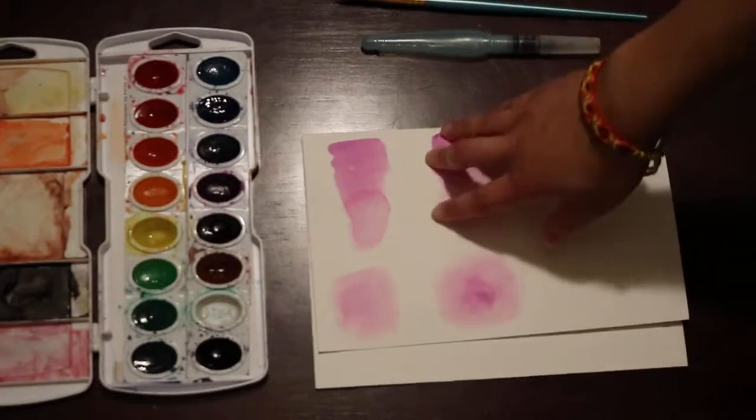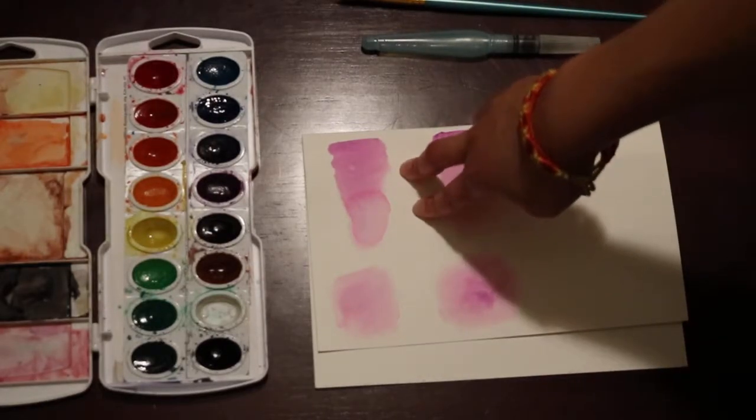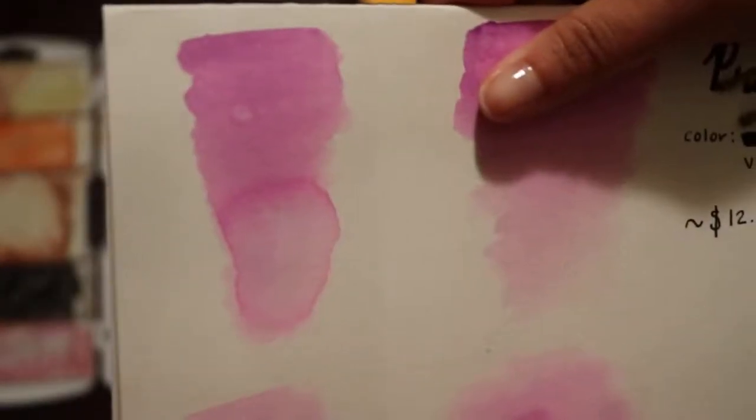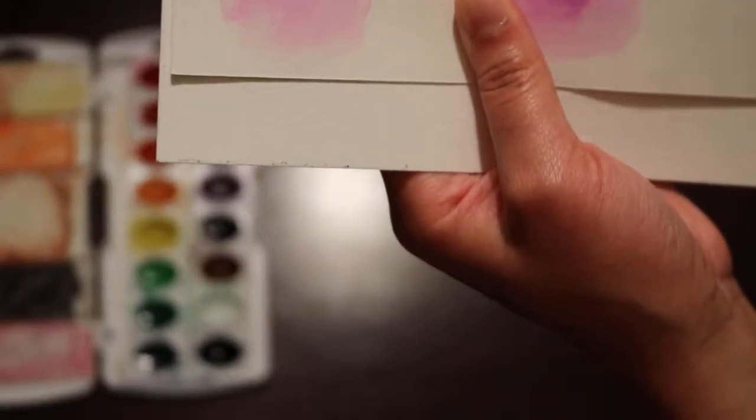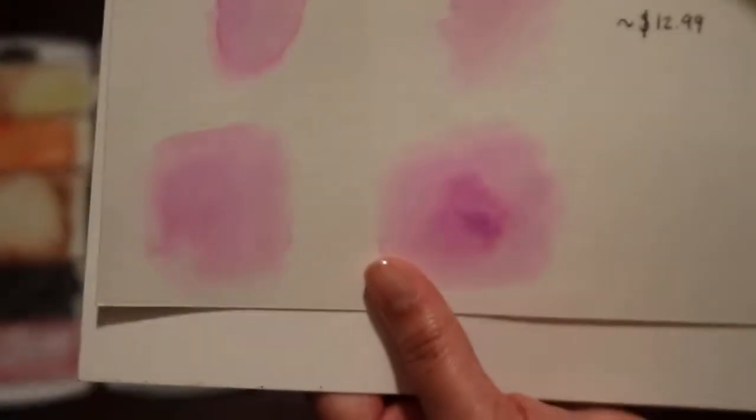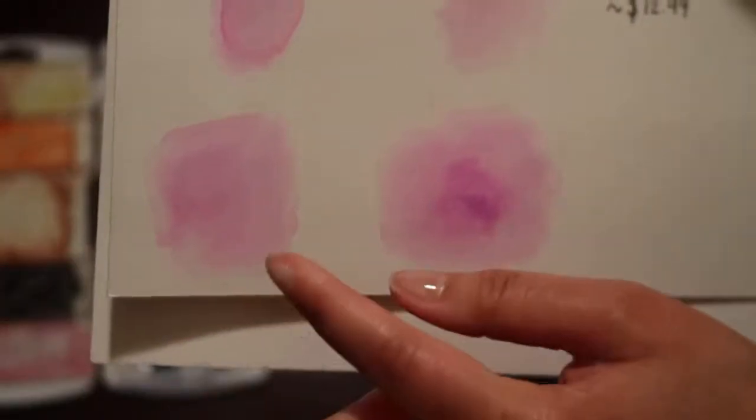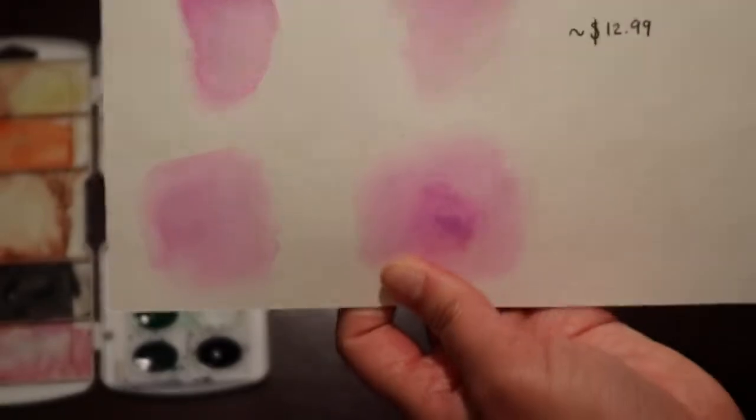But it seems to work worse with the water brush for some reason. Like you can't get, of course, it's already watered down so you can't get like the exact vibrant color of it. And it made this kind of weird ring here with the water brush. But overall it's still pretty good for like, I mean, these are like about, I got them for about $13, $14. And they do pretty good for their price.